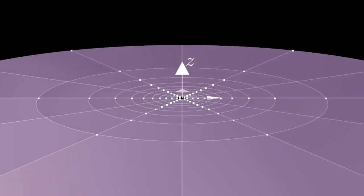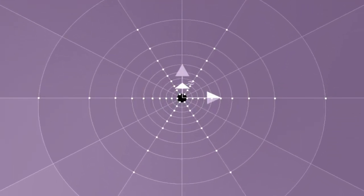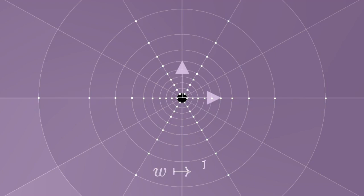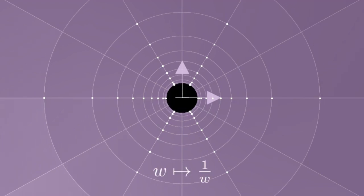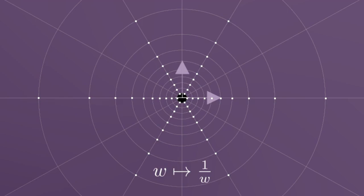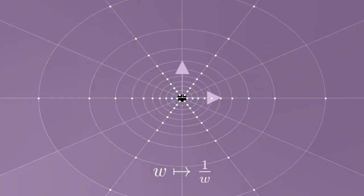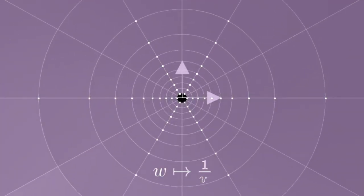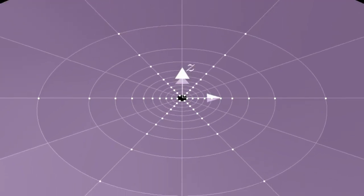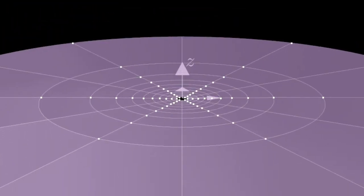Now for the last example. Take the complex transformation to be inversion, w maps to 1 over w. What this does is first inverts the modulus, and then reflects in the real axes. We have to be careful with what happens when w equals 0, but for now, I've just cut the origin out.